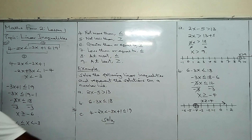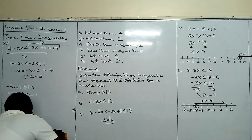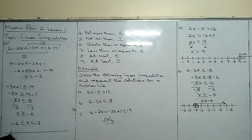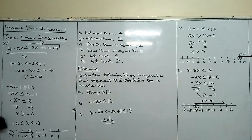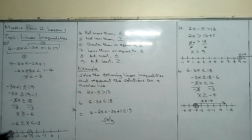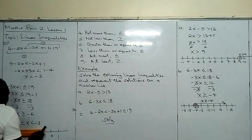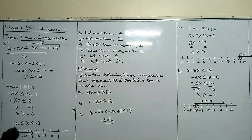Draw a number line with values from minus 6 through minus 5, minus 4, minus 3, minus 2, minus 1, 0, 1. Identify minus 6 and minus 3. At minus 6, draw a shaded circle because less than or equal to means minus 6 is inclusive. At minus 3, draw an open circle because we have only less than. Join the two circles with a line. The solution is minus 6 less than or equal to x less than minus 3. That is how you represent linear inequalities.